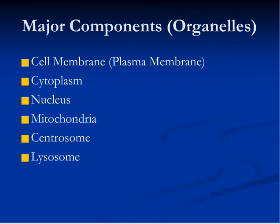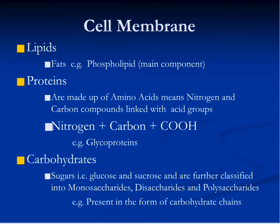Before understanding the cell membrane, we need to understand lipids, proteins, and carbohydrates. Lipid means fat in plain English, so phospholipid means fat with phosphate molecules. Proteins are made up of amino acids. Amines are organic compounds containing nitrogen molecules, and the word organic means a compound that has carbon molecules.